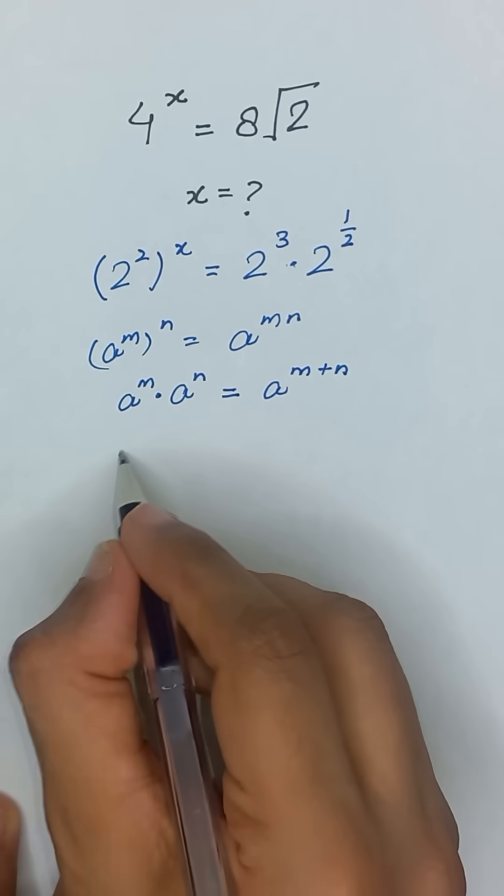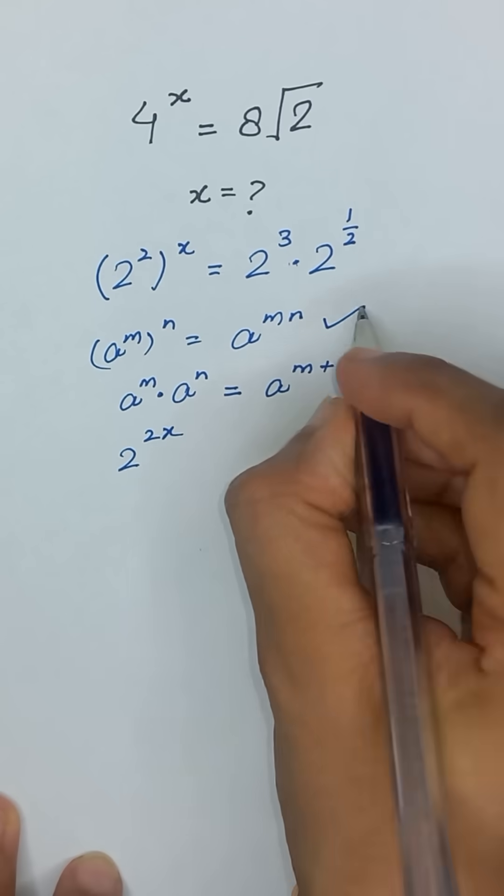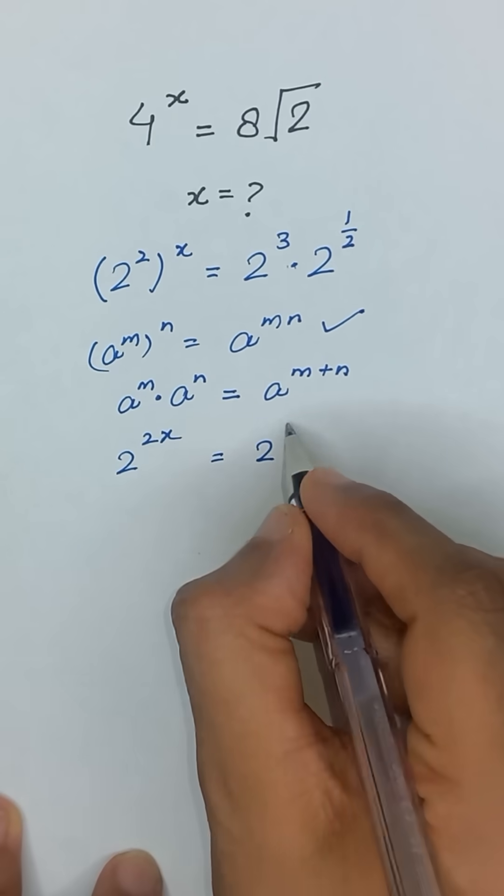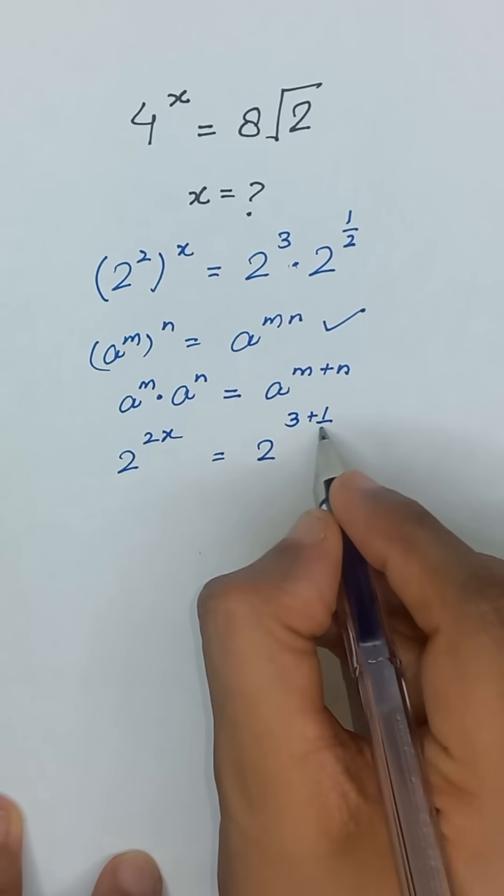So it will become 2 to the power 2x according to this exponential rule. And according to this rule, it will become 2 to the power 3 plus 1 divided by 2.